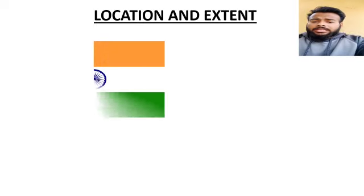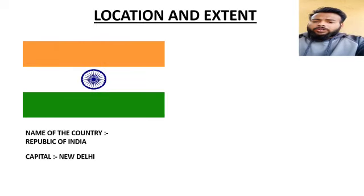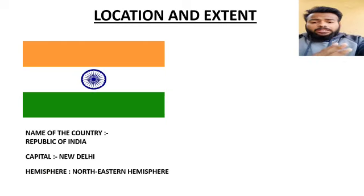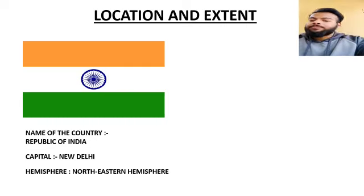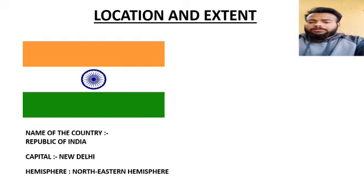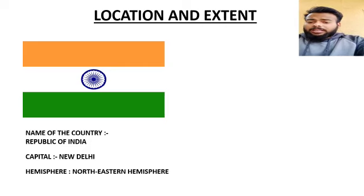Let's first begin with India. India is located in the North-Eastern hemisphere. The latitudinal extent of India is 8 degrees 4 minutes north to 37 degrees 6 minutes north, and when we talk about the longitudinal extent, it is 68 degrees 7 minutes east to 97 degrees 25 minutes east.